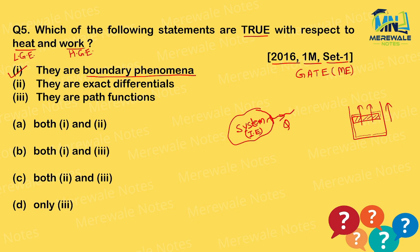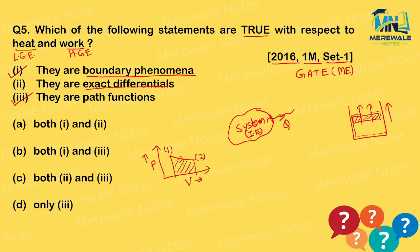Are both exact differentials? No — they are inexact differentials. Because both heat and work are path functions, as shown earlier. For two different paths between the same initial and final points, the work values differ. So the difference depends on the path, not just the endpoints, making them inexact. That is why we denote heat as δQ or đQ, and work as δW or đW — whereas internal energy, being a point function, uses exact differential notation dU.